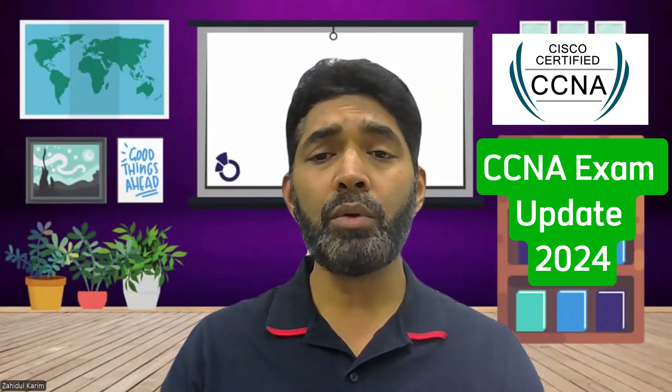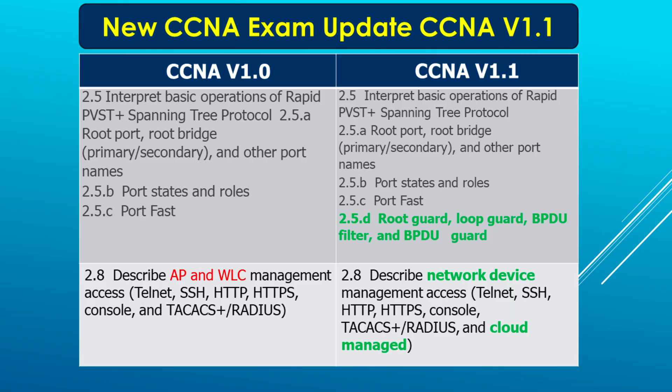Now let's have a look at what changes we actually have. There is a comparison between version 1.0, which is what we currently have, and version 1.1, which comes after August 20th. In version 1.0, we already have basic operations of Rapid PVST+ spanning tree protocol — root port, root bridge, other port names, port states and roles, and PortFast. Basically, all these topics are related to spanning tree protocol.